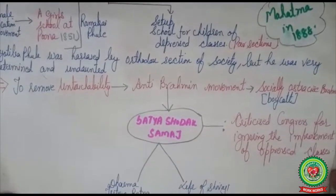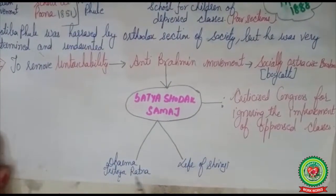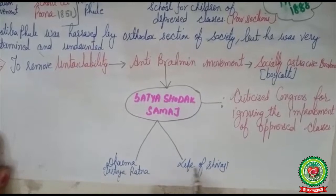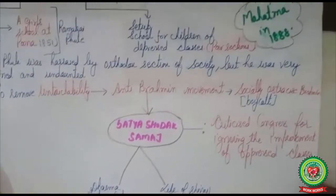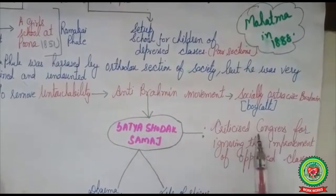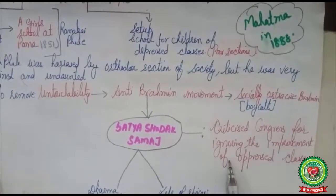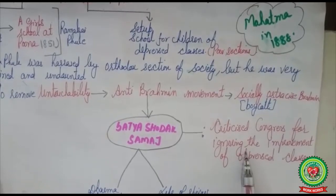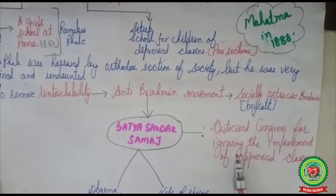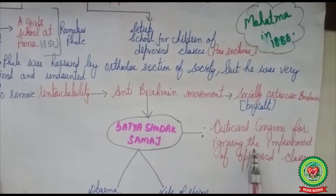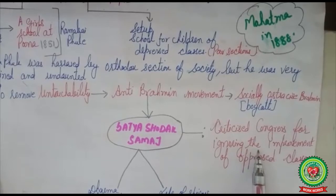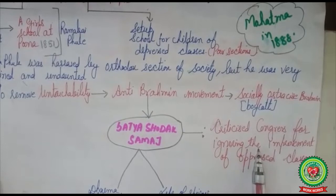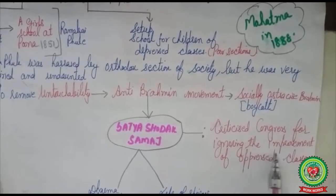To popularize his Satya Shodak Samaj, Mahatma Jyotiba Phule published two journals: one was 'Dharmat Trithya Ratna' and the second was 'Life of Shivaji.' Through his Satya Shodak Samaj he criticized the Congress for ignoring the improvement of the oppressed class. This was the early years of Congress formation, when most leaders were early nationalists, favoring British policies, and Congress was dominated by upper-caste, English-educated people, leaving no place for the lower-caste people.